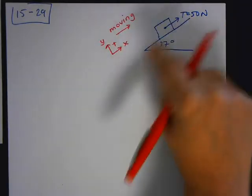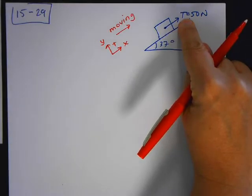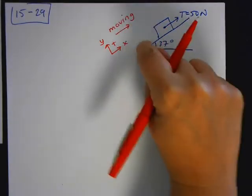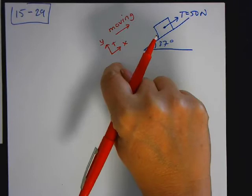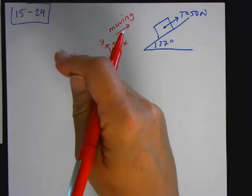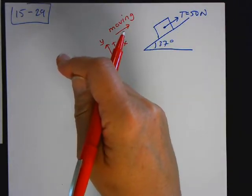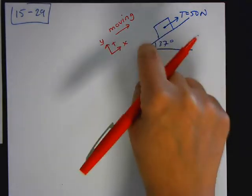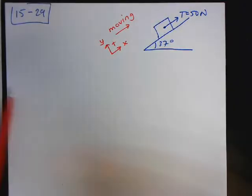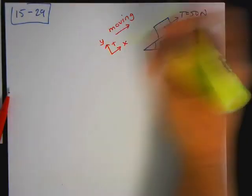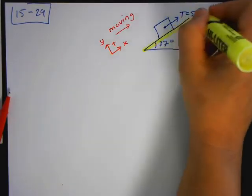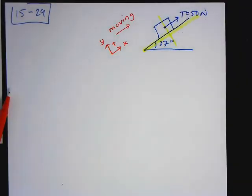So up the incline is going to be positive because that's the direction it's moving, and down the incline is going to be negative. If the block was moving down the incline, I'm going to change my sign convention because I have to sum forces in the direction in which it's moving. So my sign convention now, my x and my y, is going to be parallel and perpendicular to the surfaces in contact.